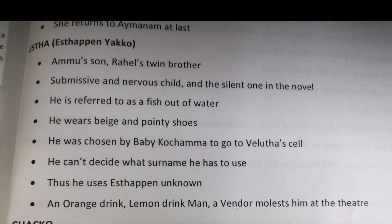Next character: Estha, Estepen Yakov. He is Ammu's son and Rahel's twin brother — a submissive and nervous child, the silent one in the novel. He is referred to as a fish out of water. He wears beach shoes and pointy shoes. He was chosen by Baby Kochamma to go to Velutha's cell. Velutha was innocent, but unfortunately, as he was from a low caste, Baby Kochamma tried to convince the police that Velutha was the killer of Sophie Mol. Estha can't decide what surname to use, so he uses Estepen Unknown. An orange-drink lemon-drink man, a vendor, molested him at the theater.